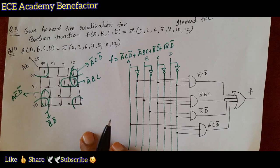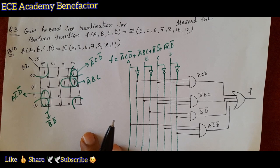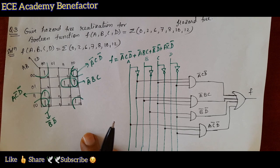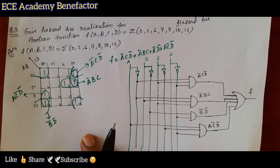Hazards exist because a change in the input results in different product terms covering two minterms, or different sum terms covering two maxterms. Hazards can be eliminated by enclosing two minterms or maxterms together. When the circuit moves from one product term to another, there is a possibility of a momentary interval when neither term equals 1, giving rise to an undesirable 0 output. We do overlapping of terms to avoid hazards and achieve hazard-free realization.